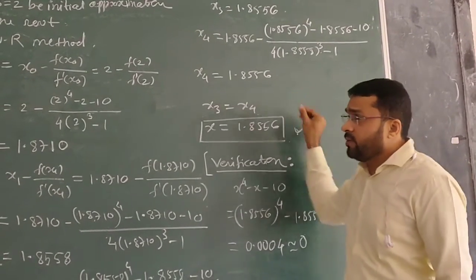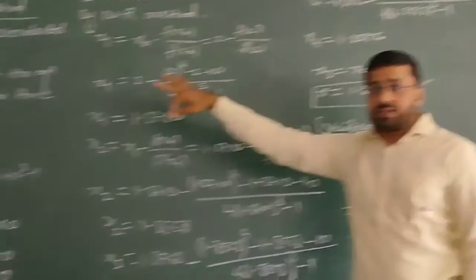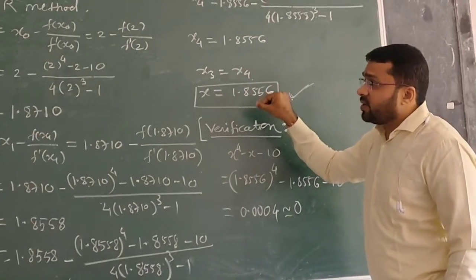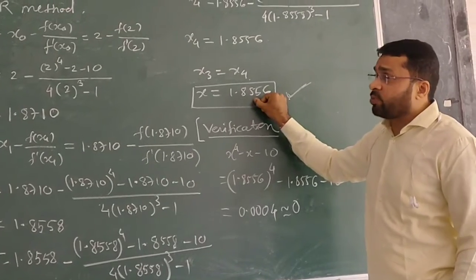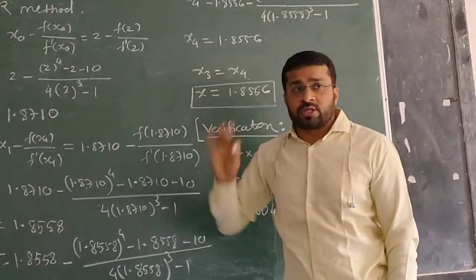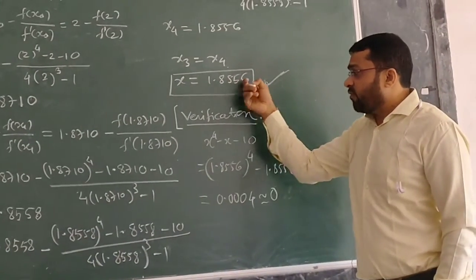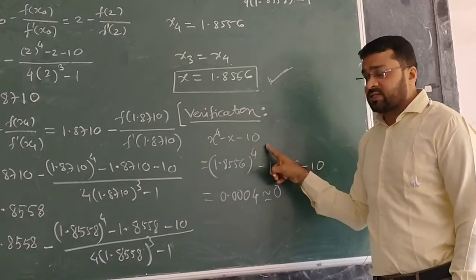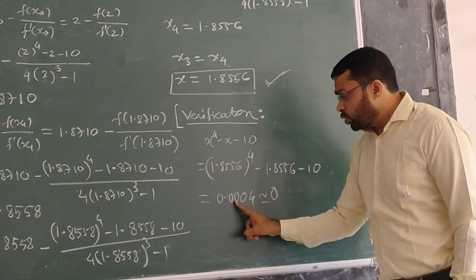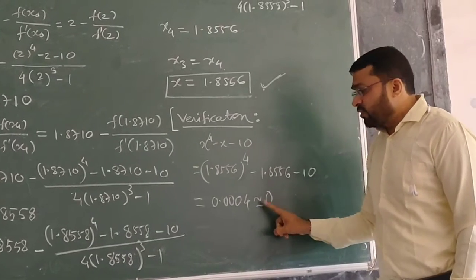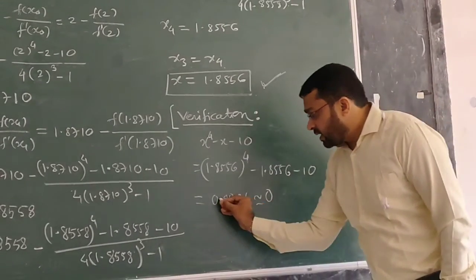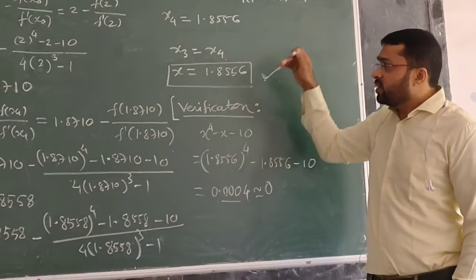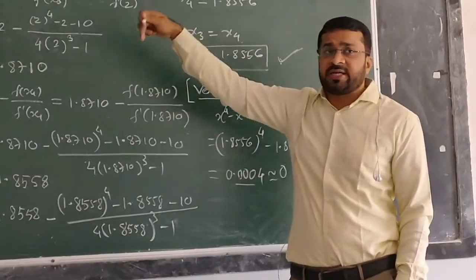This is the real root for the given algebraic equation. Now we check whether this root is correct to three decimal places or not. I put this value of x in the given function: x^4 - x - 10. We get 0.0004, which is nearly equal to zero when rounded to three decimal places. This means this root is correct up to three decimal places.